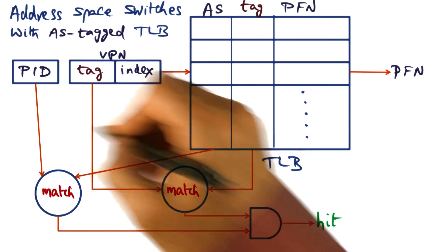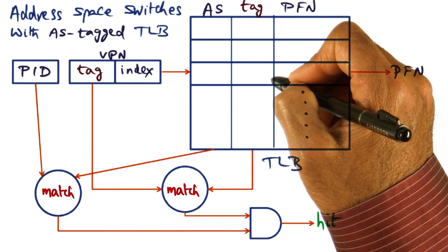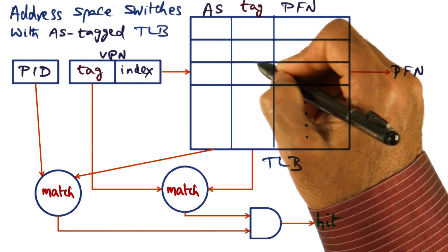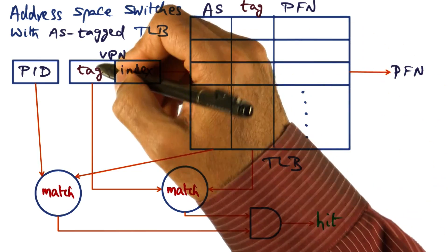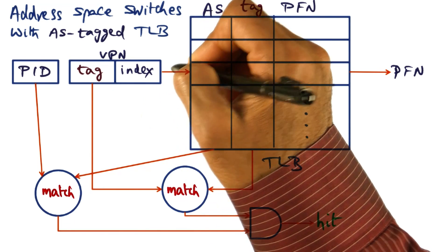On the other hand, if it does match and this entry corresponds to this process, we ask whether the tag associated with this entry is the same as the tag contained in the virtual address.